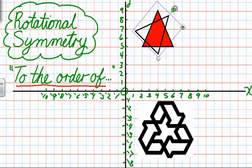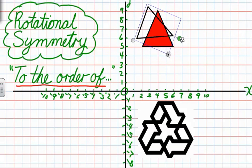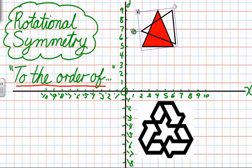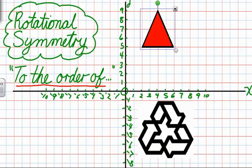Alright, so I'm turning it and I've left the red triangle there to show you where we started. And in this case, because it's an isosceles triangle, there is a rotational symmetry to the order of 1.